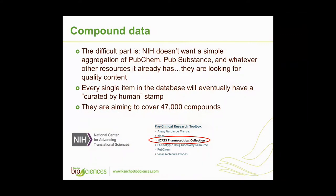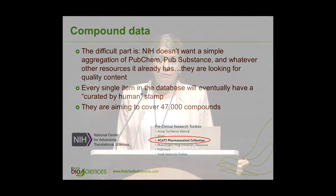The difficult part: we knew at the onset they are aiming to cover close to 50,000 compounds — the amount collectively synthesized and tested over a few years. NIH doesn't want a simple aggregation from already available repositories like PubChem and PubSubstance. They want a stamp of manual curation on every single item. Because they want to be a gold standard. Putting that stamp on every item is a massive amount of effort.